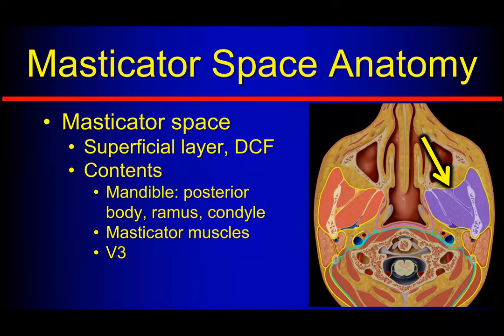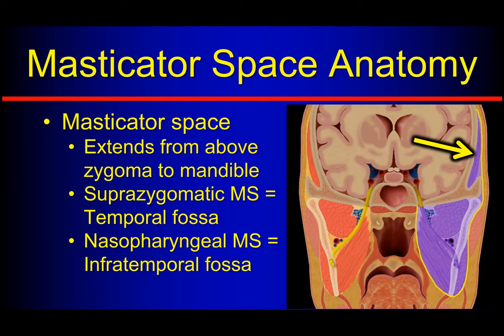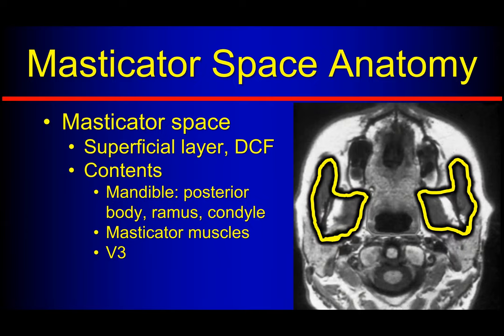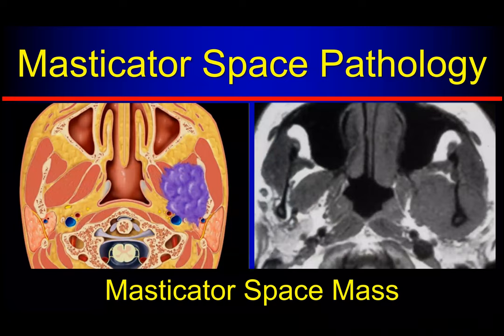Lateral to that, we have the masticator space — here we have part of the posterior mandible, the muscles of mastication with the masseter, medial pterygoid, lateral pterygoid, a little bit of fat, and importantly cranial nerve V3 going through there to enter the mandible and supply the muscles of mastication. The masticator space has different segments: a superzygomatic masticator space above the zygomatic arch — the temporal fossa — and an infrazygomatic masticator space, or the infratemporal fossa. We see cranial nerve V3 going through that space from foramen ovale, between the lateral and medial pterygoid.